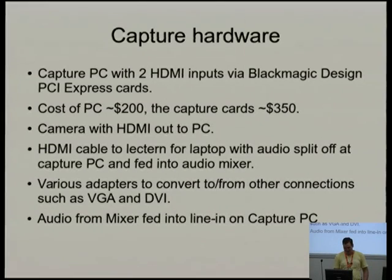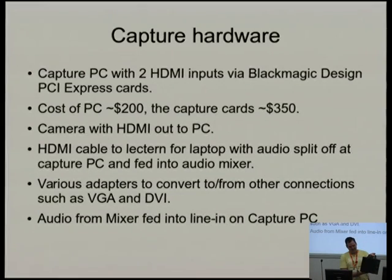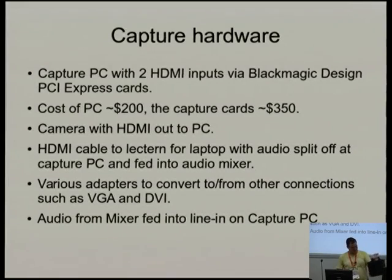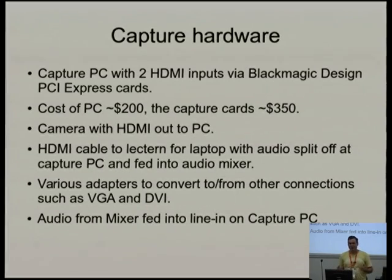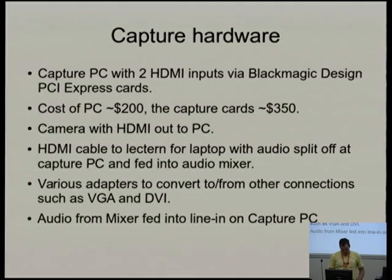The PC we're using has hardware costing about $200. It's a Celeron system — 2.7 GHz dual core, 2 GB RAM — mainly because the PC isn't doing much encoding. Initially we were using Core i3s and i5s, but in our testing that was overkill, because these cards feed in raw video. It is converting to DV, but that's not very intensive.